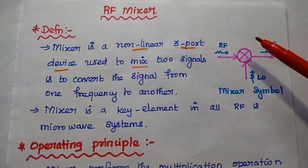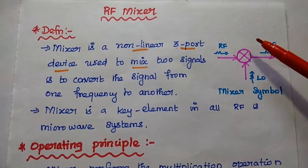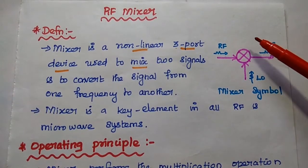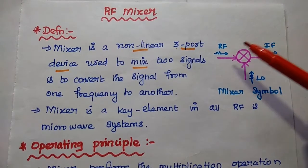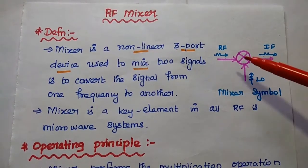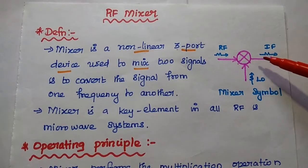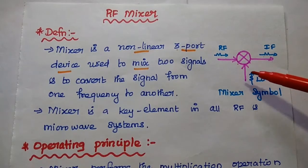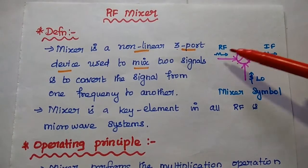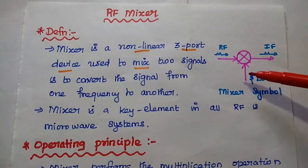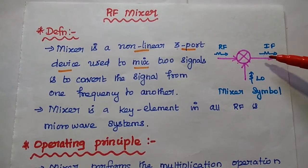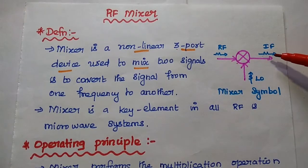Dear students, now we are going to discuss RF mixer and its types in detail. Let's start with the definition. A mixer is a three-port non-linear device. It is mainly used to mix two signals with different frequencies to produce a new signal.